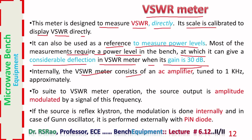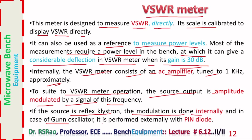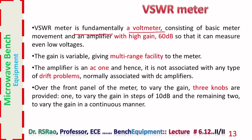Internally, the VSWR meter consists of an AC amplifier tuned to approximately 1 kHz. Suited to VSWR meter operation, the source output is amplitude modulated by a signal of this frequency. If the source is a reflex klystron, modulation is done internally; in case of a Gunn oscillator, it is performed externally with a PIN diode. The VSWR meter is fundamentally a voltmeter consisting of a basic meter movement and a high-gain amplifier (60 dB) so that it can measure even smaller voltages.